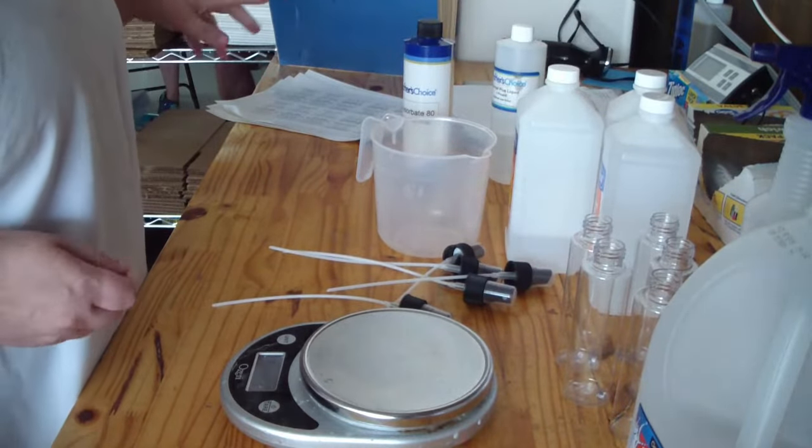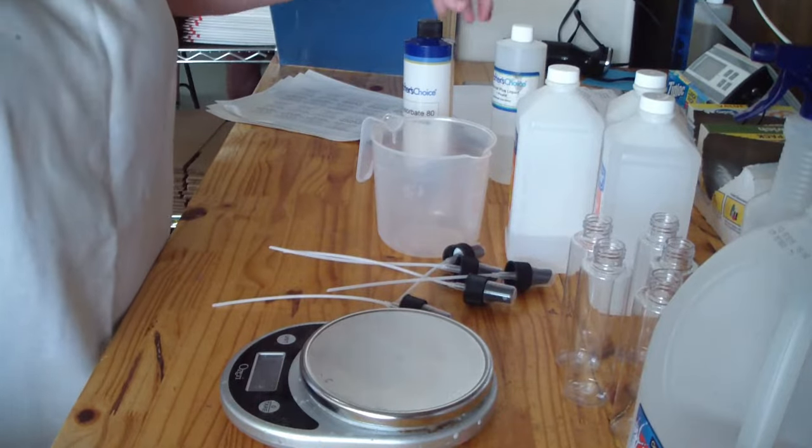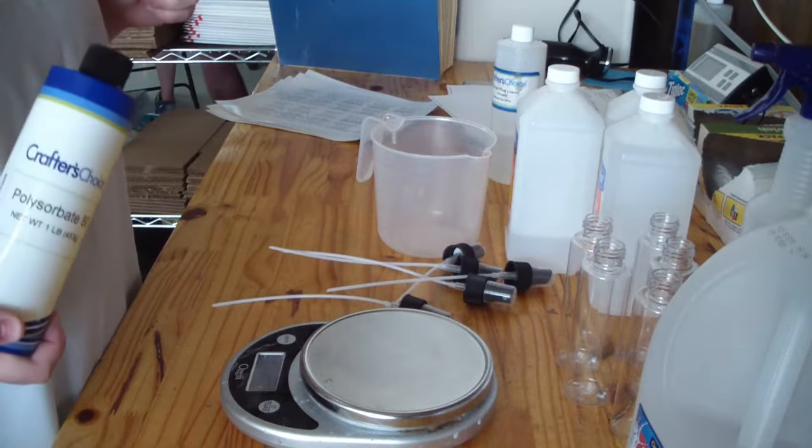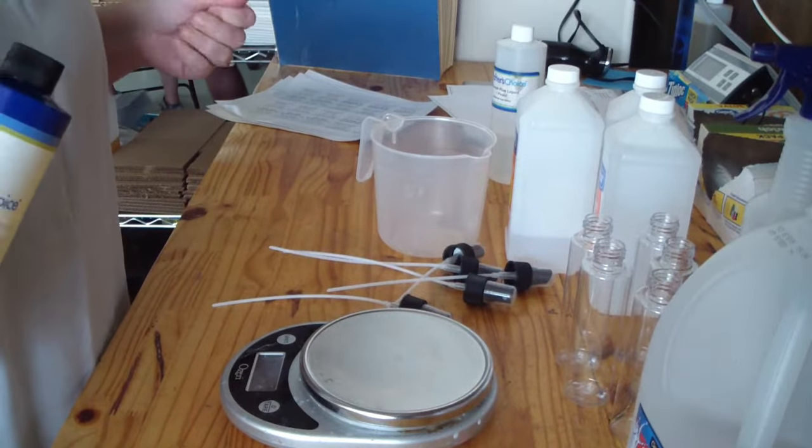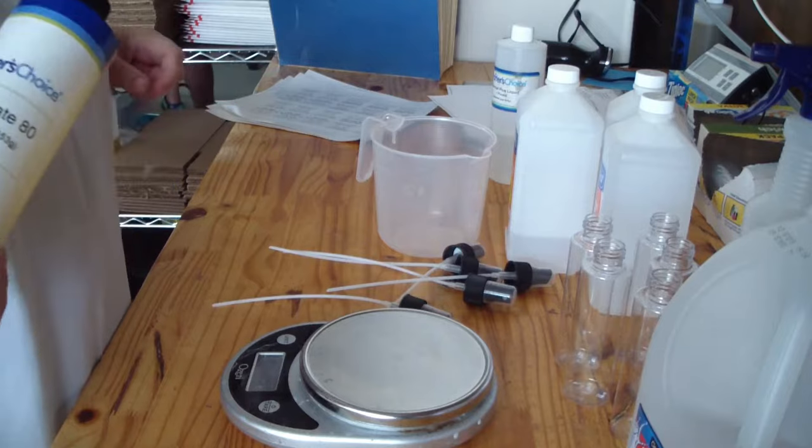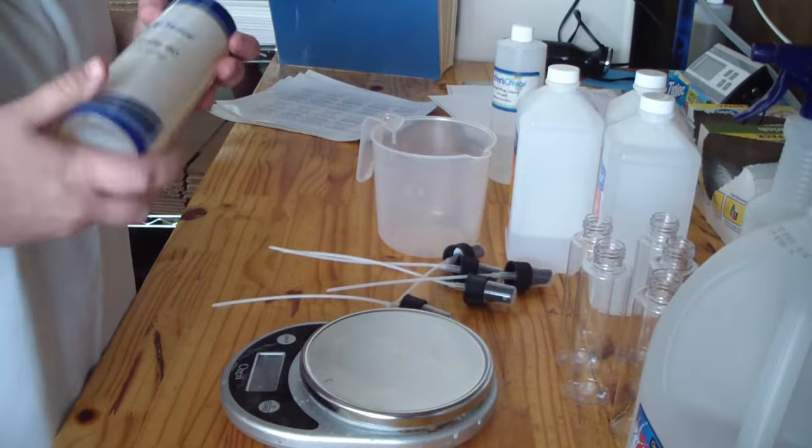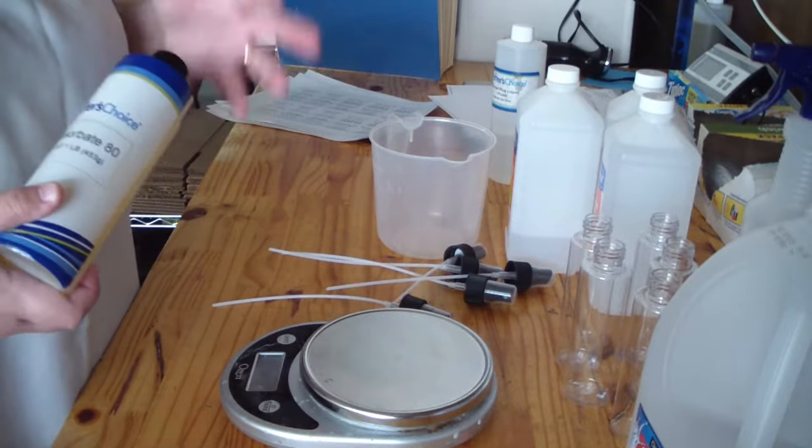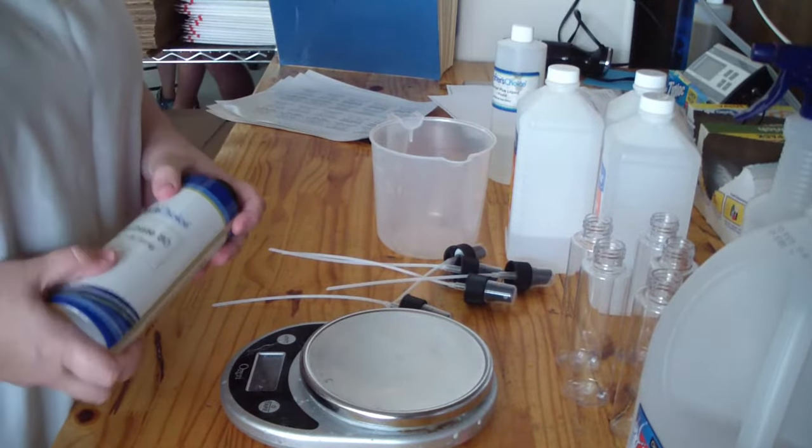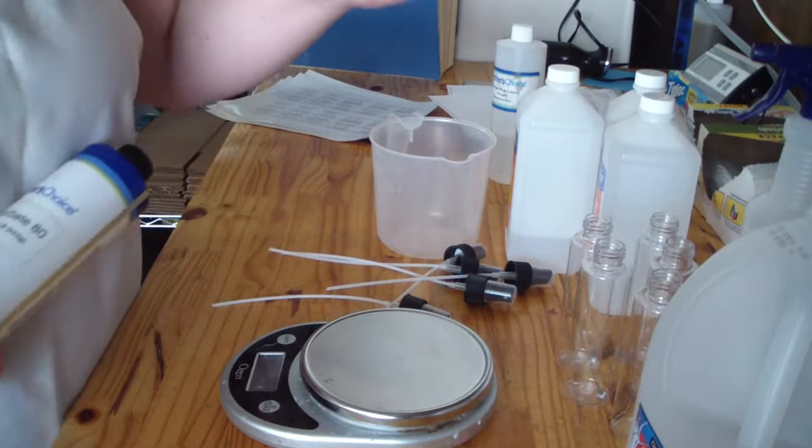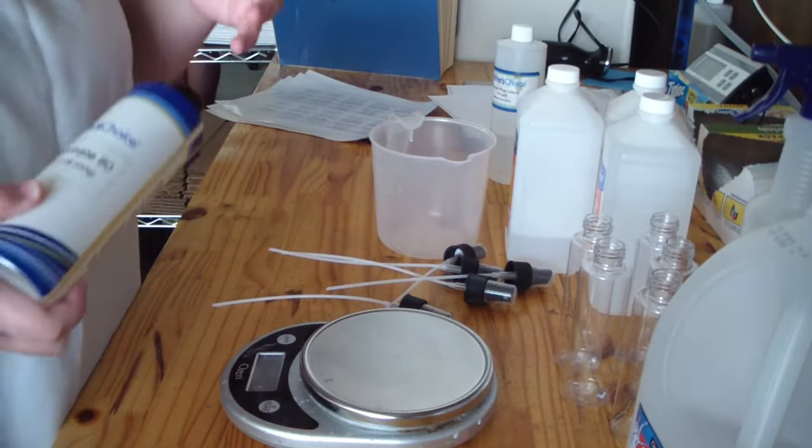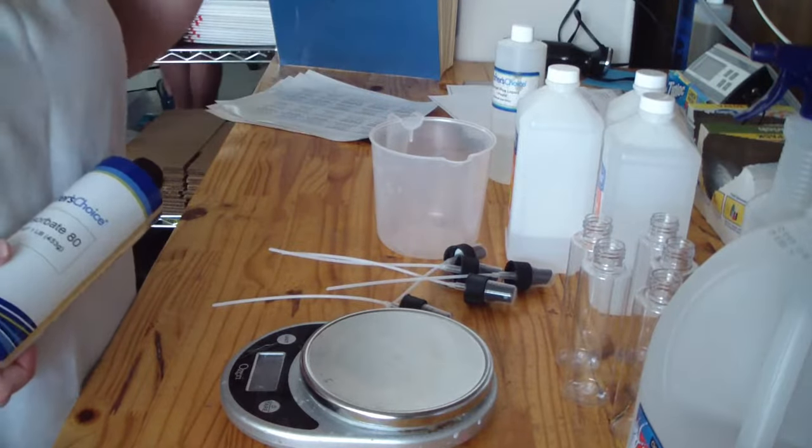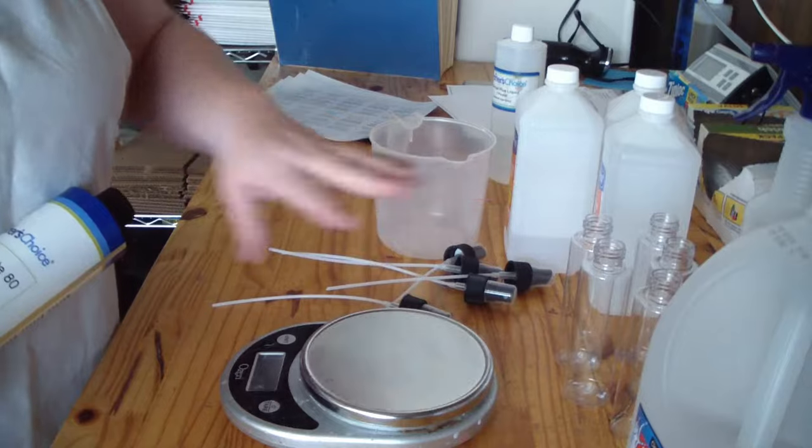Then we have polysorbate 80. Now we went over in our last video doing room sprays why we use polysorbate 20 versus polysorbate 80. This recipe is not all water so we're not using polysorbate 20. Polysorbate 20 emulsifies your fragrance into water. Polysorbate 80 will emulsify our fragrance into the alcohol and the water, so that's why we're using polysorbate 80.